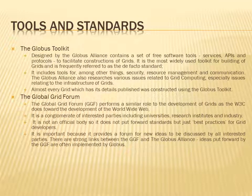The most common or de facto standard used is the Globus toolkit. It was designed by the Globus Alliance and consists of free software tools — services, APIs, and protocols — to facilitate construction of grids. It is the most widely used toolkit for building grids and is referred to as the de facto standard. It includes tools for security, resource management, and communication. The Globus Alliance also researches various issues related to grid computing and grid infrastructure. Almost every grid was created using the Globus toolkit.